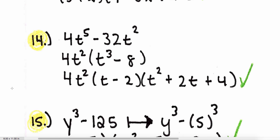Number fourteen: 4t to the fifth minus 32t squared. The GCF is 4t squared, so we factor that out to the front, leaving t to the third minus 8. Now 8 is 2 to the third power, so a is t and b is 2 — this is the difference of cubes. It factors into 4t squared times t minus 2, times t squared plus 2t plus 4.